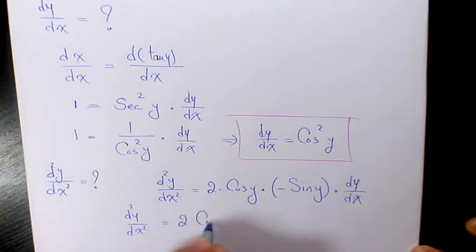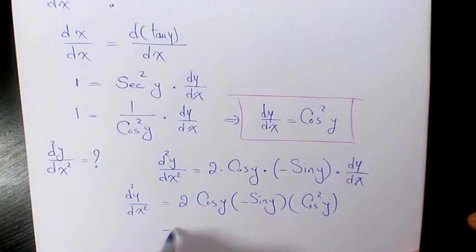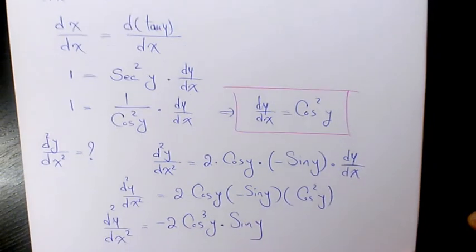So 2 times cosine y times negative sine y times cosine squared y, we're going to have negative 2 cosine cubed y times sine y. So that's the second derivative to this function.